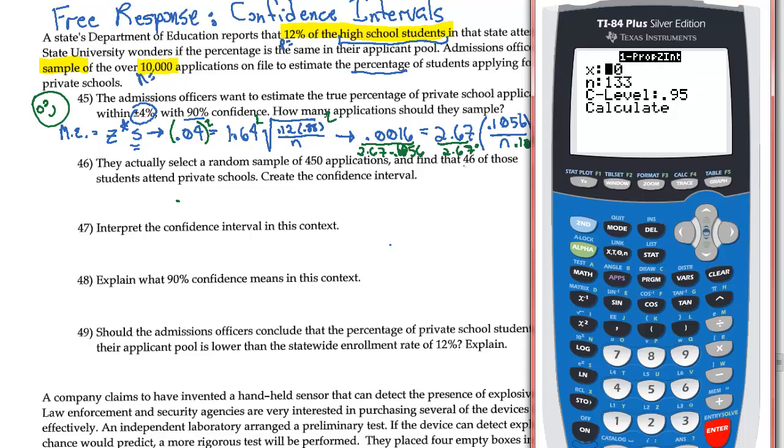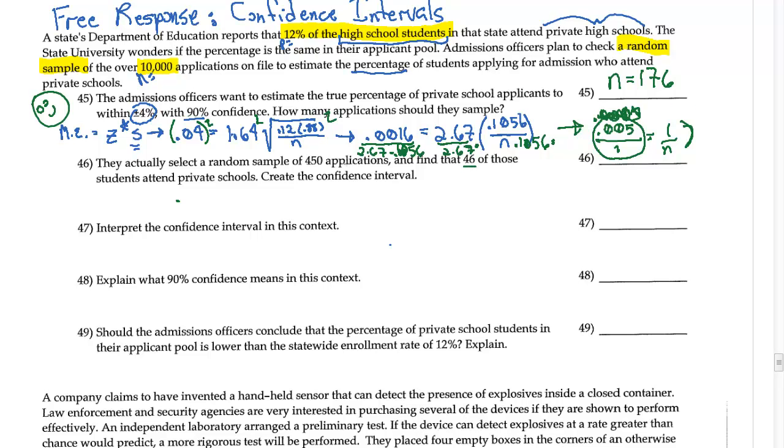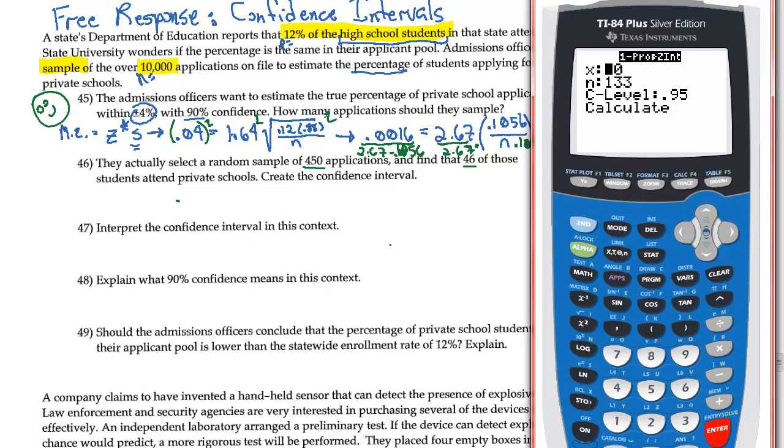I have 46 of those applicants and 450, so I can actually go ahead and do 46 applicants out of 450 that actually applied. And I want a 90% confidence interval here, so I'm going to plug in 0.9 as my confidence interval, and then I calculate. And this value right here, this is my confidence interval. So from about 7.8% to 12.6%.